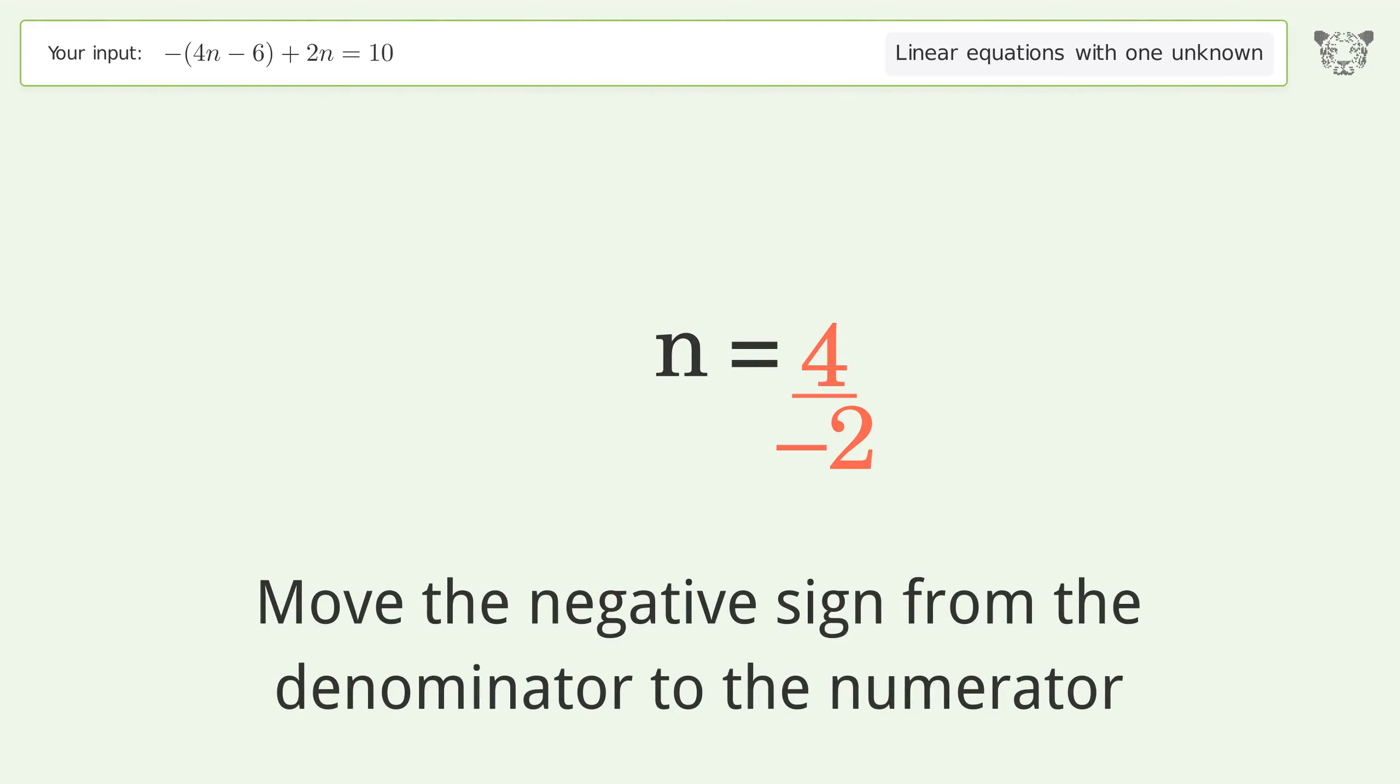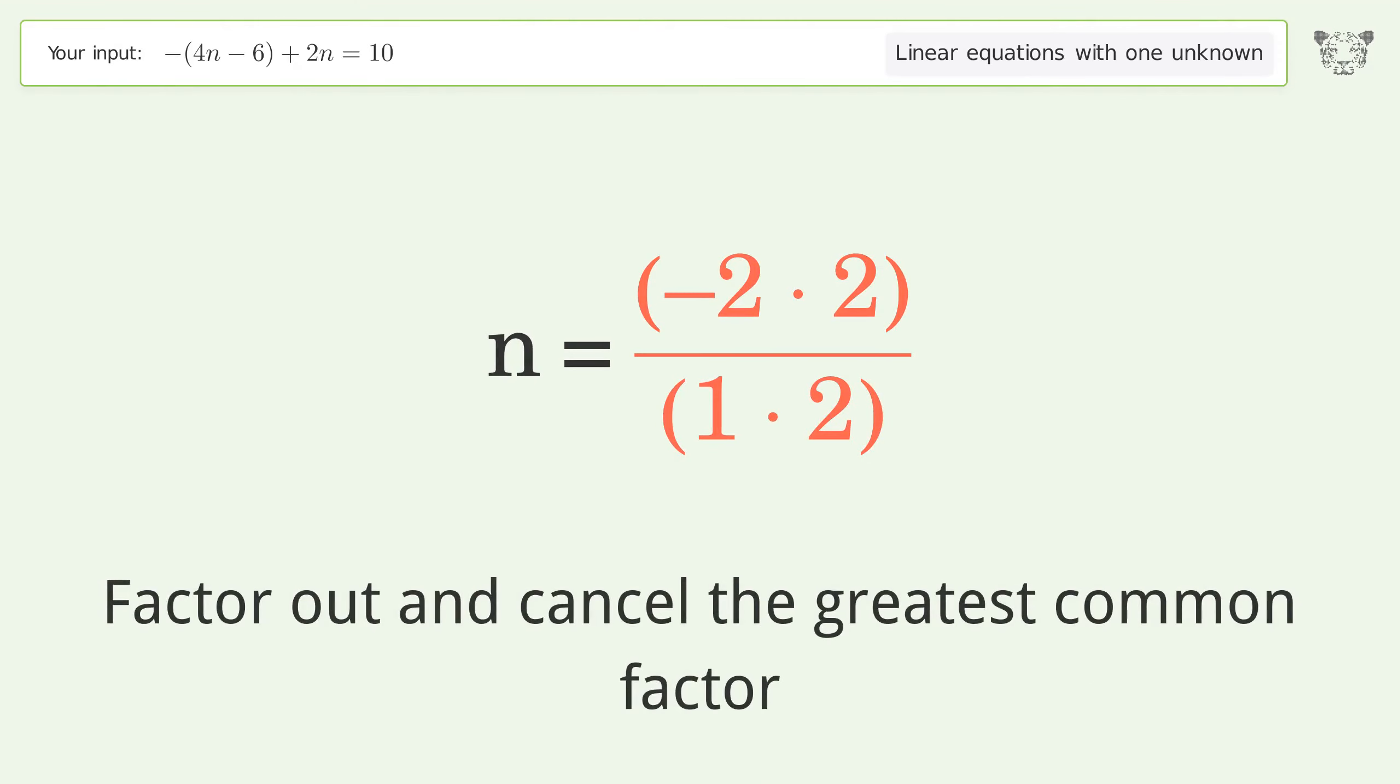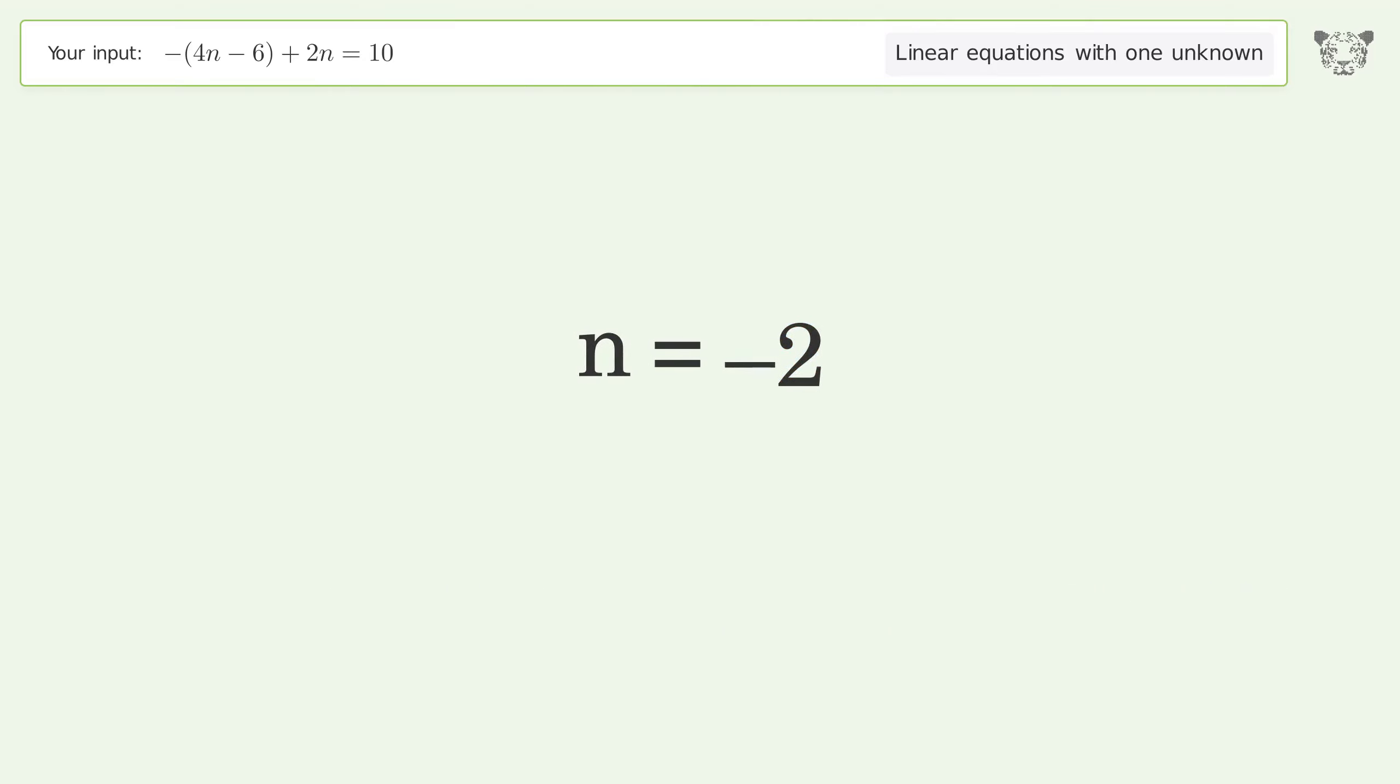Simplify the fraction. Move the negative sign from the denominator to the numerator. Find the greatest common factor of the numerator and denominator. Factor out and cancel the greatest common factor.